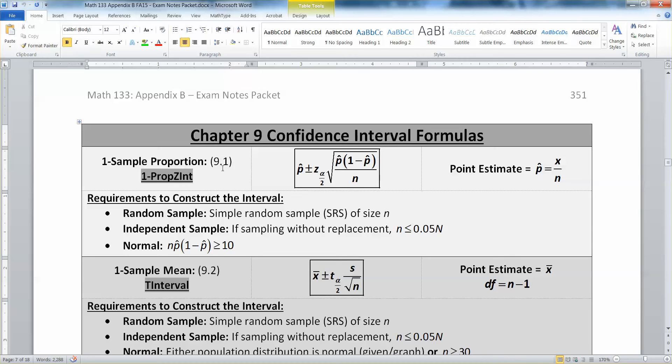When you look at this right here, you can see that a single sample proportion, one prop Z int, uses Z alpha over 2.